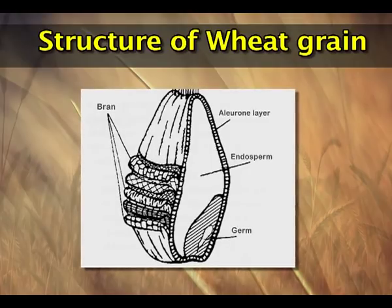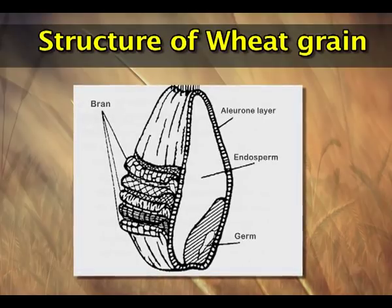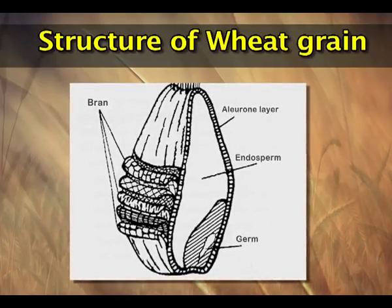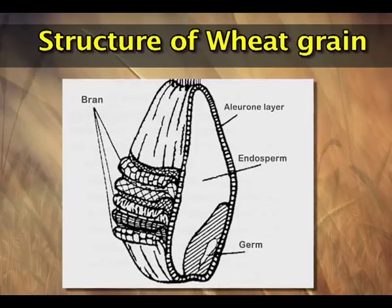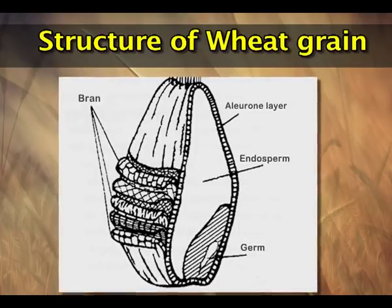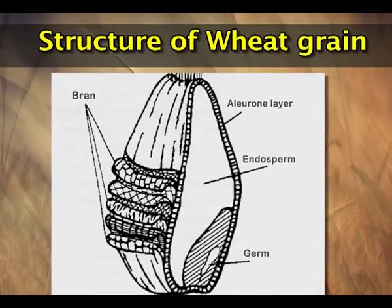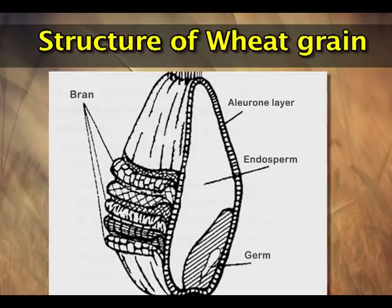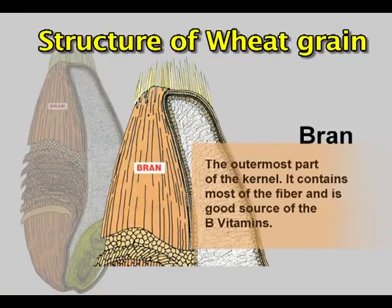The grain is first surrounded by the epidermis, which consists of thin-walled long rectangular cells. Next to the epidermis is the hypoderm of varying thickness. Next to the hypoderm is the seed coat or testa, which may consist of a thin single or double layer of cells. Next to the seed coat is the hyaline layer, which is colorless and devoid of any cellular structure. These four layers make up the bran or pericarp. Sometimes when cereals are processed, the outer bran and pericarp are removed during processing.